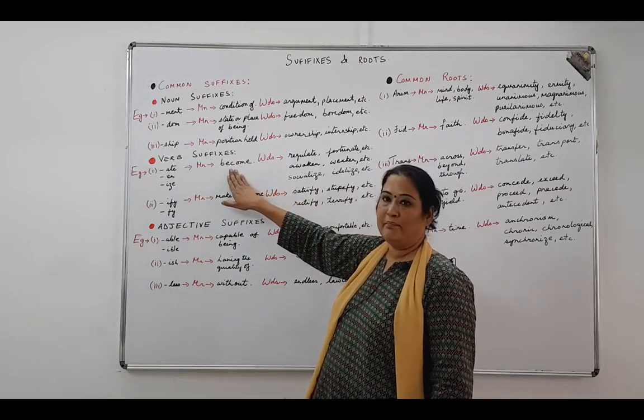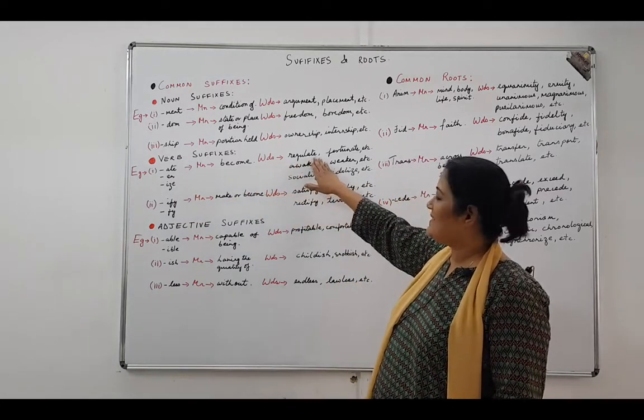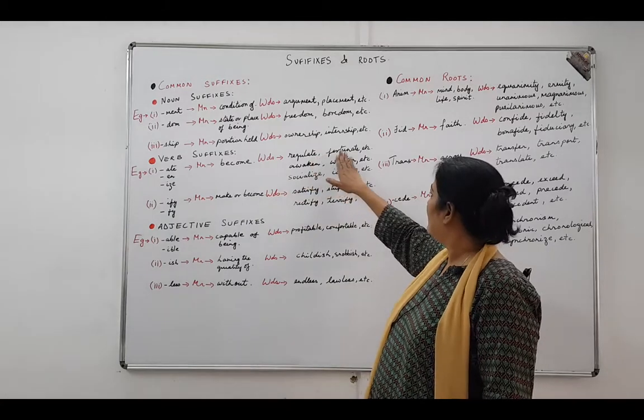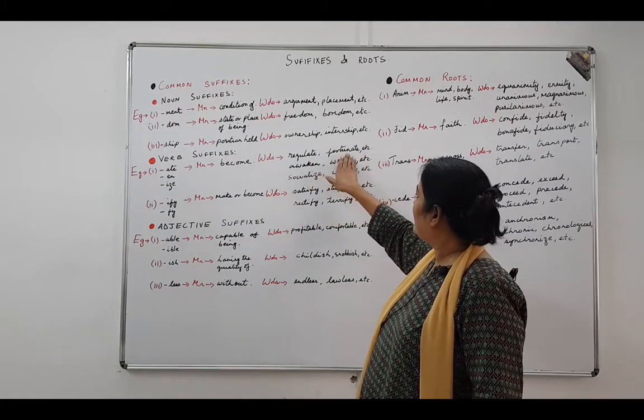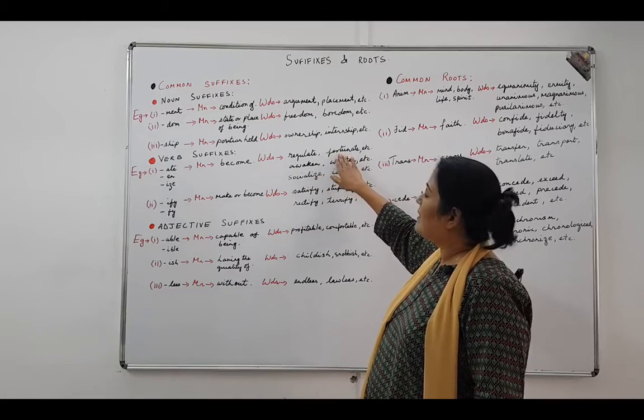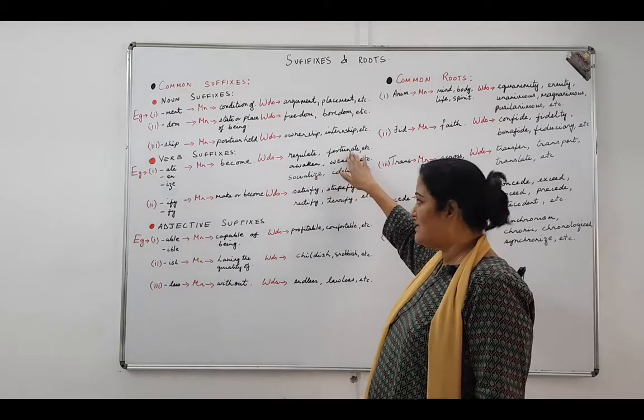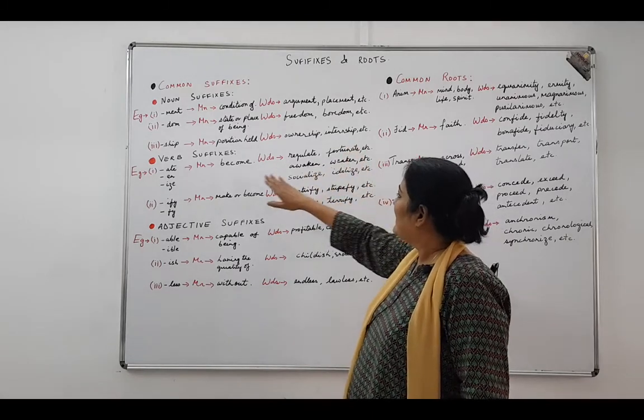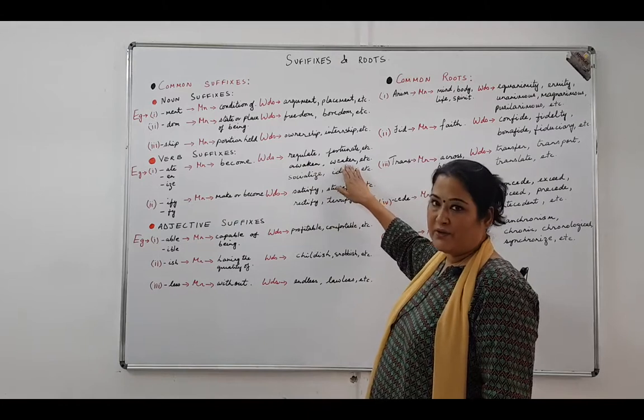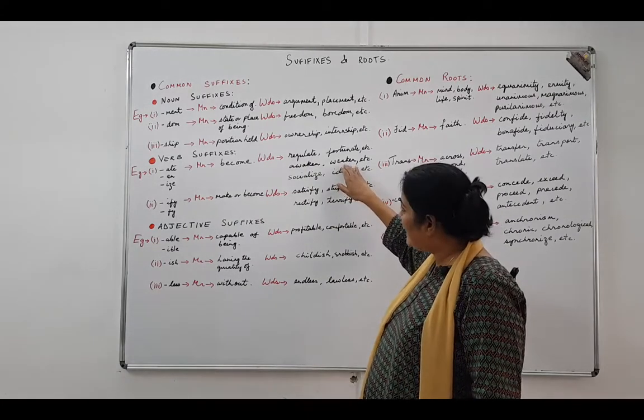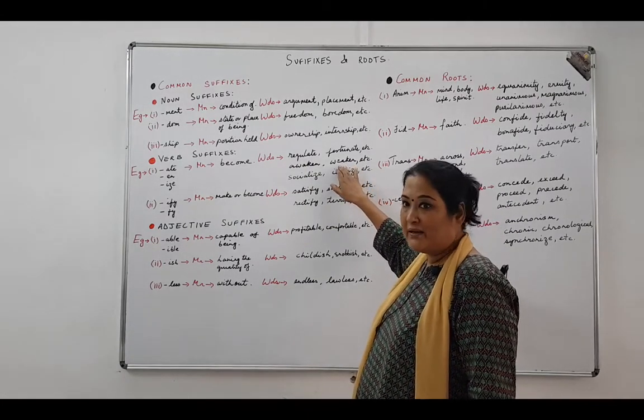The meaning is become. Look at the words for a-t-e: regulate, fortunate. So anybody who is becoming or having fortune is fortunate and enjoying their state. E-n gives you awaken, weaken. So if you have become weak, then you call it a weakened position.